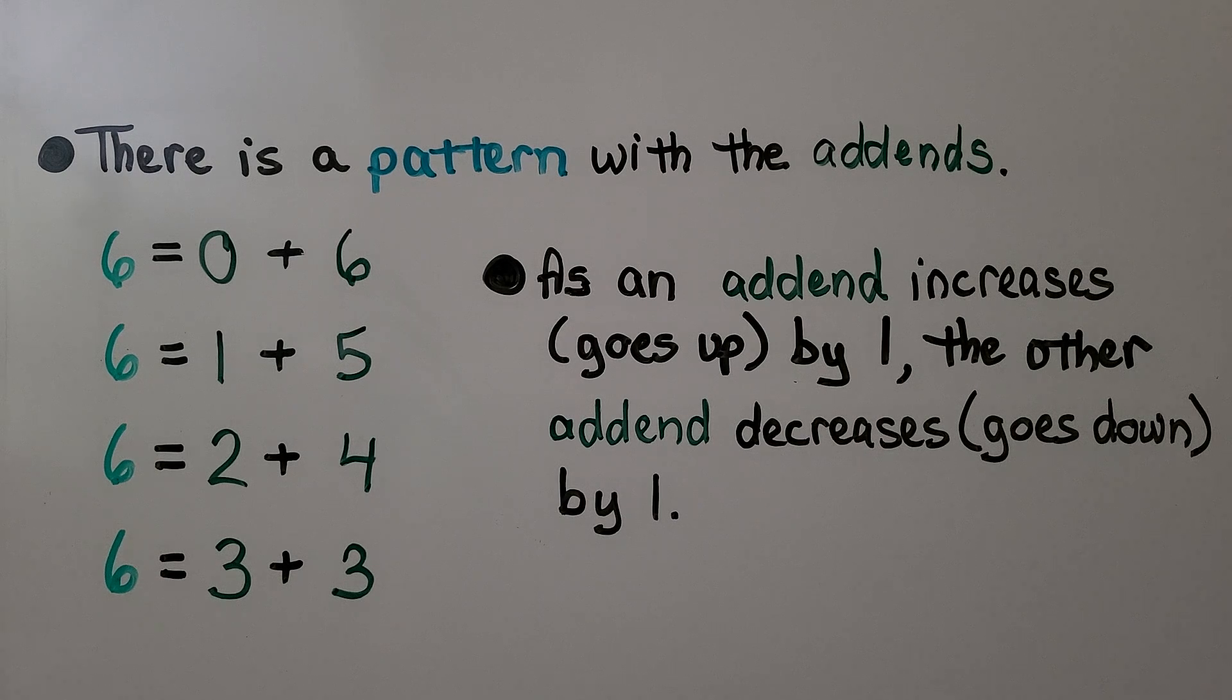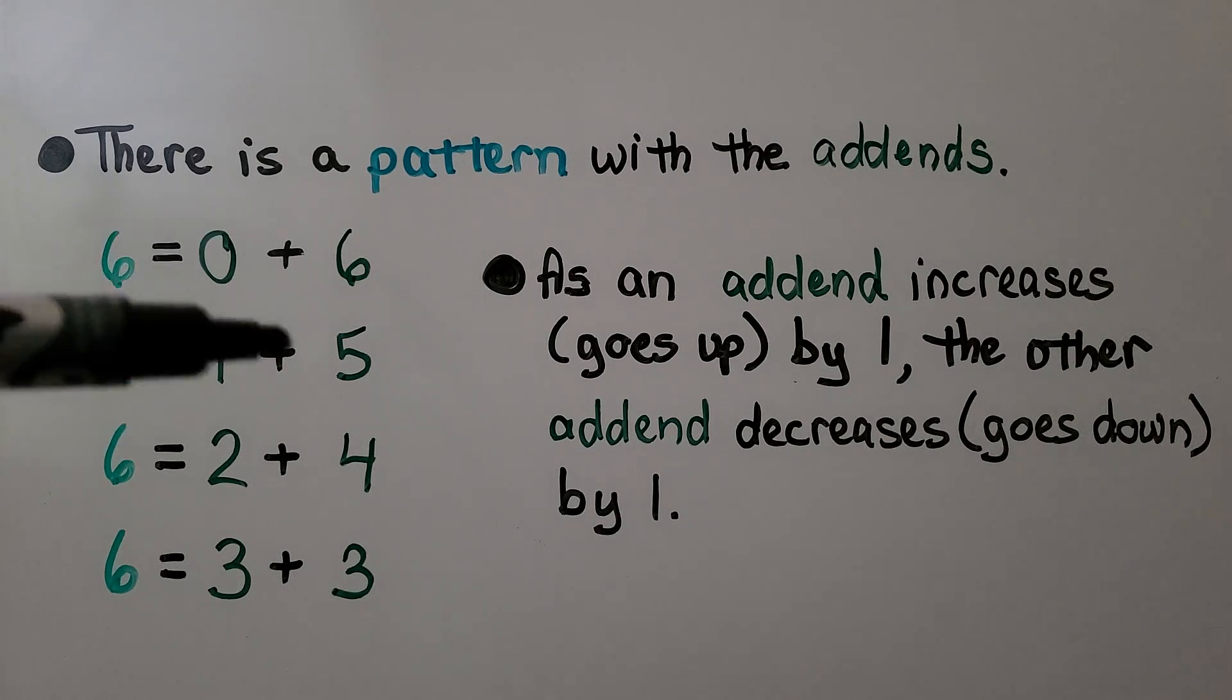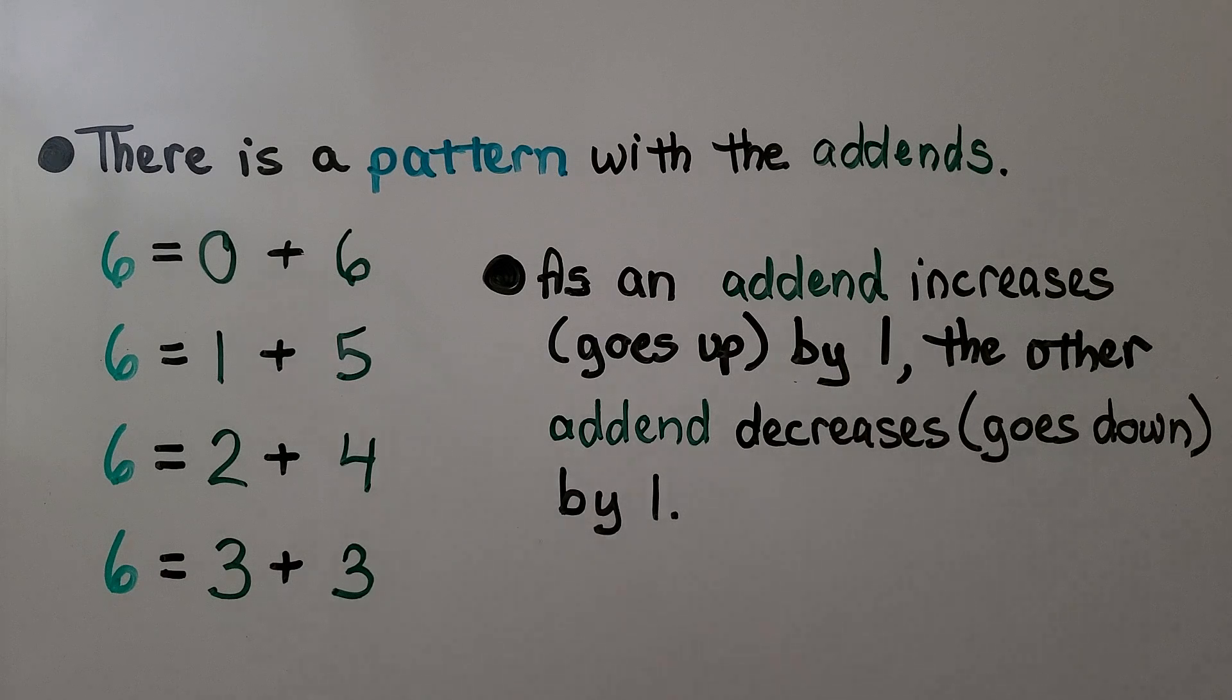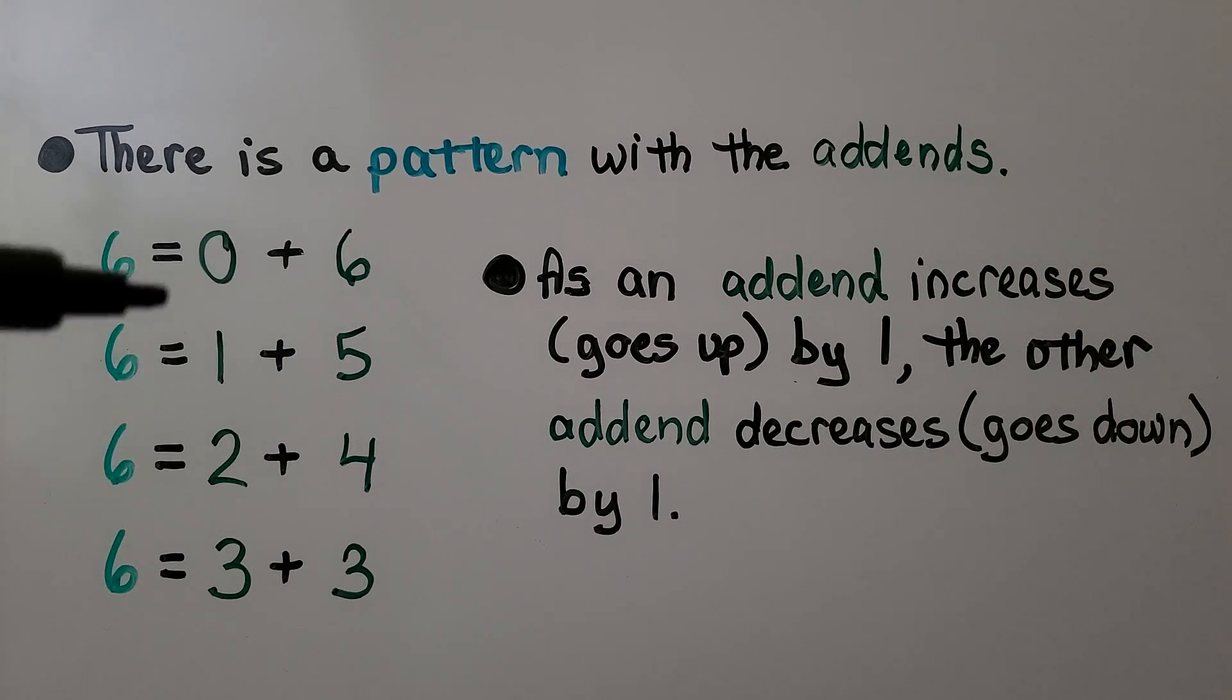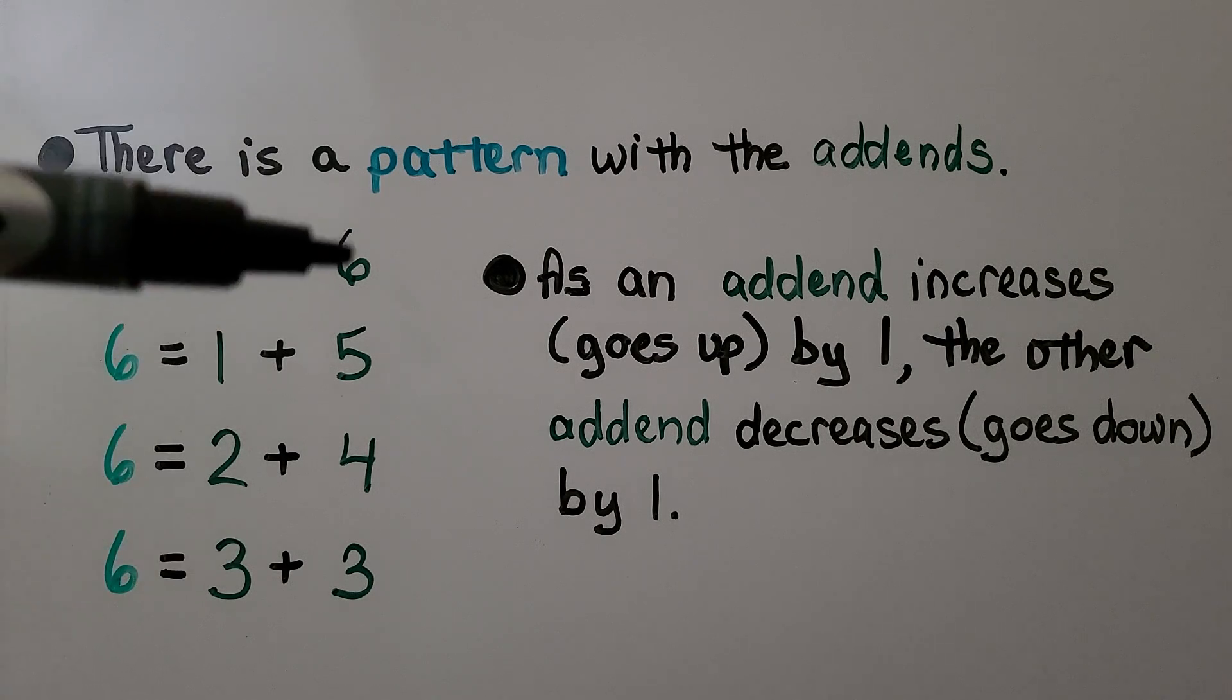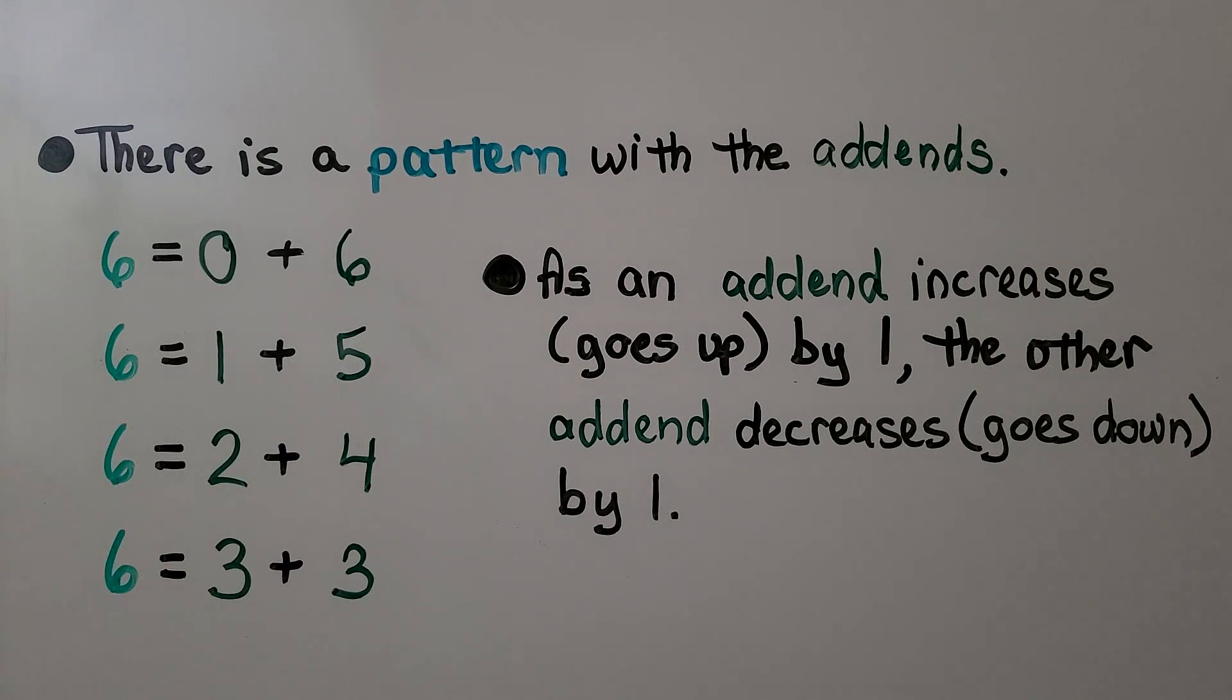There's a pattern with addends. We have 6 equals 0 plus 6, or 1 plus 5, 2 plus 4, 3 plus 3. As one addend increases, going 0 to 1 to 2 to 3, the other addend is decreasing, going 6, 5, 4, 3. These are going up by 1, these are going down by 1, and they all equal 6.